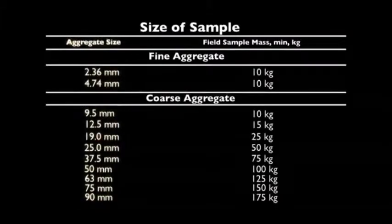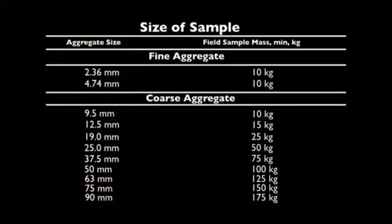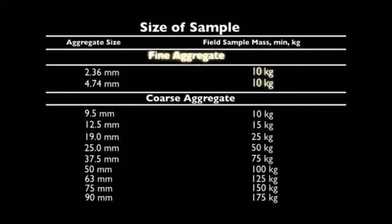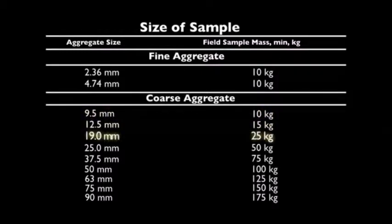Sample sizes for routine quality tests are found in Table 1. The column on the left represents the nominal maximum size of the aggregate specified. The column on the right represents the minimum size of the field sample in kilograms. For a fine aggregate sample, the size of the field sample is always a minimum of 10 kilograms. The field sample size increases with the nominal maximum size of the aggregate.